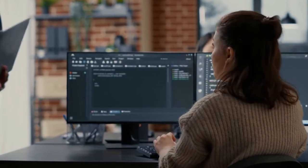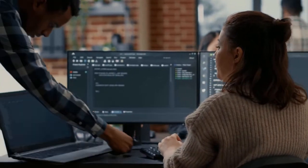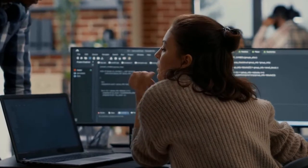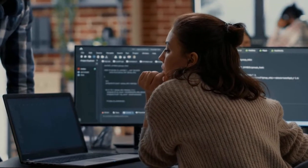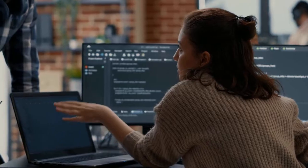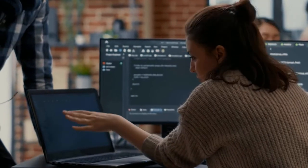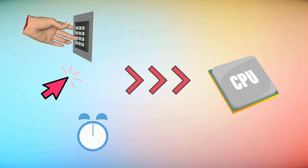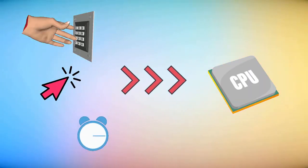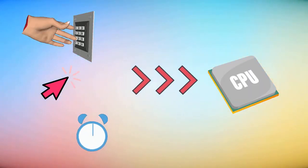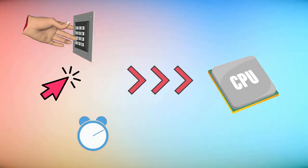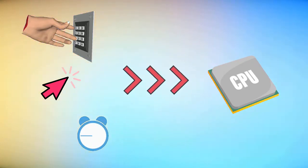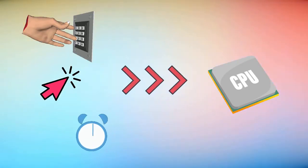What exactly is interrupt latency? If we frame this question differently, we can ask: what actually happens during interrupt latency time? Interrupt latency is the time duration between when an external interrupt is triggered and when the interrupt handler or interrupt service routine starts executing by the CPU.